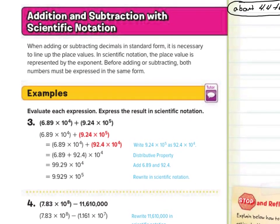Now as we start the second part of our lesson — addition and subtraction with scientific notation. When adding or subtracting decimals in standard form, it is necessary to line up the place values. In scientific notation, the place value is represented by the exponent. Before adding or subtracting, both numbers must be expressed in the same form.